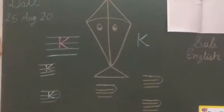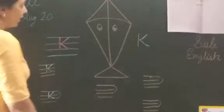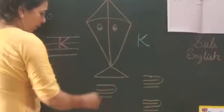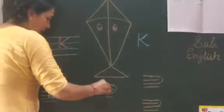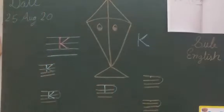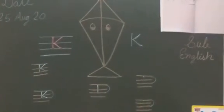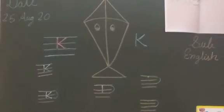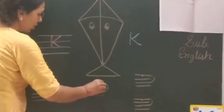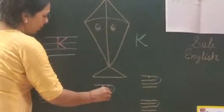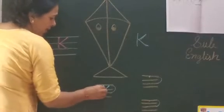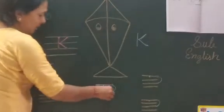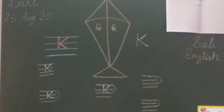Let's make letter K. For K, first we make one standing line, then two dots, then one slanting line, and a second slanting line. That makes letter K.